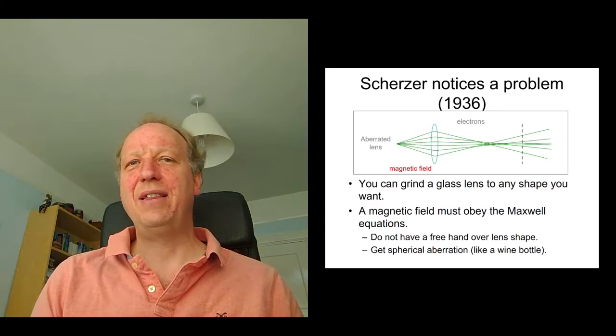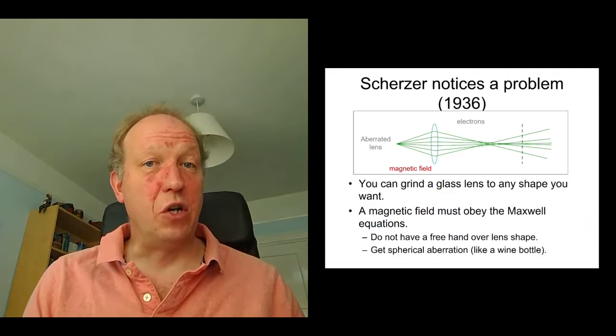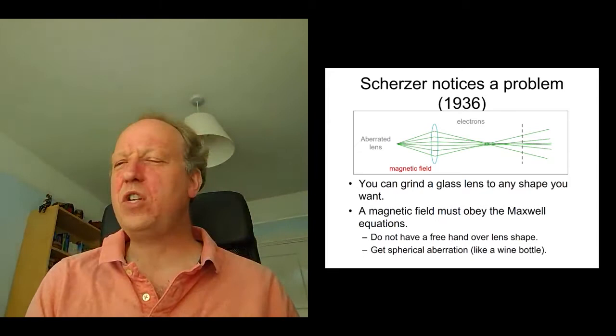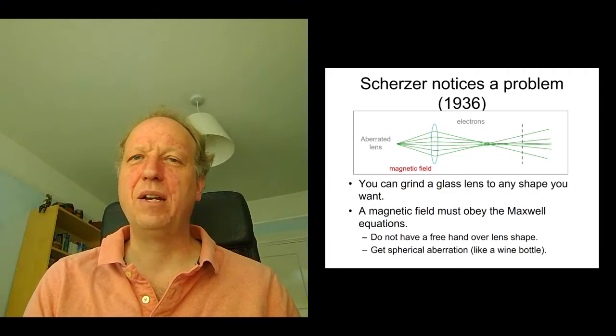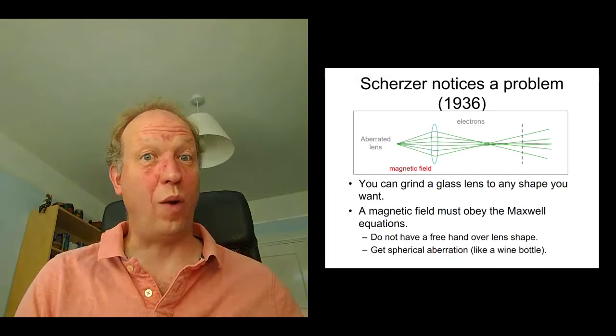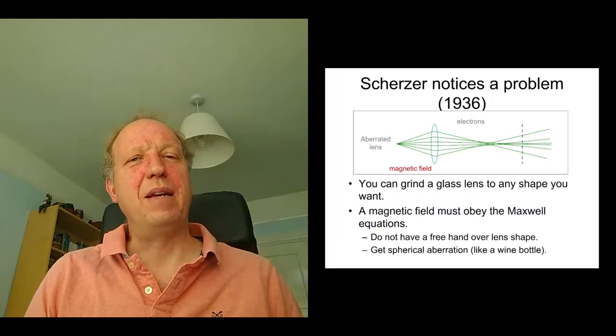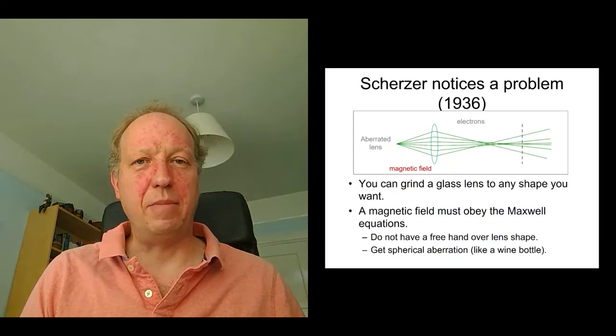This poor quality of lenses, this very strong spherical aberration, has for many years limited the resolution of the electron microscope to really just about the distance between atoms. We've just about been able to image atoms, but really, really right on the limits of what the electron microscope can achieve. And it's been really frustrating that although we've got this very, very short wavelength, much shorter than the distance between the atoms, the quality of the lenses means that the atoms are only just about resolvable in the microscope previously.